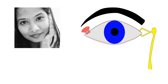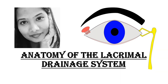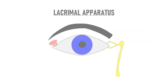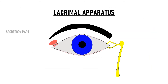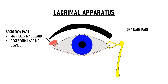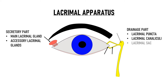Welcome to iCare Central. In this video we will talk about the anatomy of the lacrimal drainage system. The lacrimal apparatus consists of two parts: the secretory part and the drainage part. The secretory part is made up of the main lacrimal gland and the accessory lacrimal glands. The drainage part is made up of the lacrimal puncta, lacrimal canaliculi, the lacrimal sac, and the nasolacrimal duct. In our previous video we discussed the anatomy of the secretory part; in this video we will talk about the drainage system.